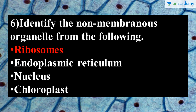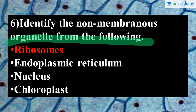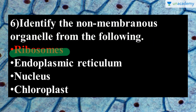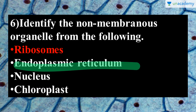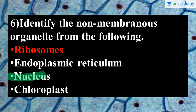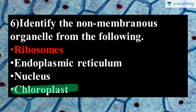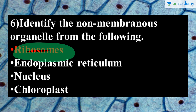The next question is: identify the non-membranous organelle from the following — ribosomes, endoplasmic reticulum, nucleus, or chloroplast. Both rough and smooth endoplasmic reticulum are membrane-bound organelles. The nucleus in eukaryotic cells is also membrane-bound, and the chloroplast has two membranes — an outer and an inner membrane. Ribosomes, however, do not have any kind of membrane around them. So the correct answer is ribosomes.